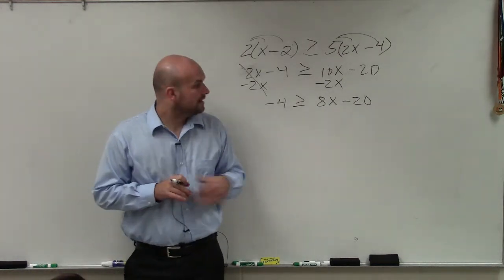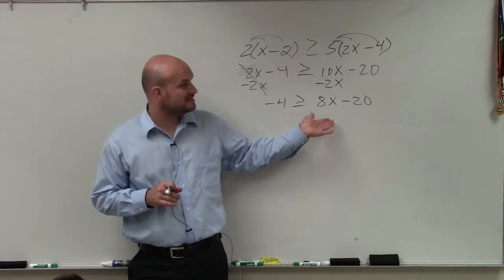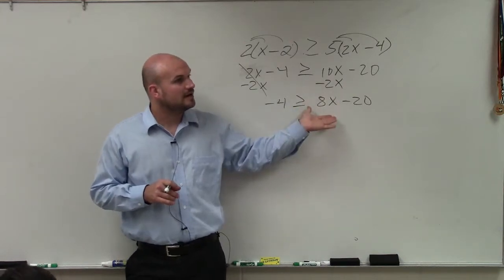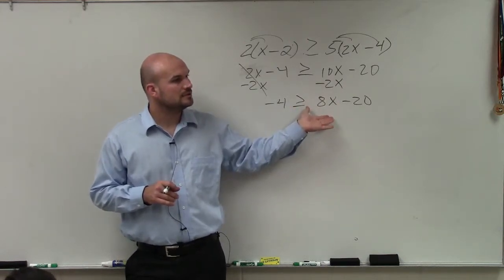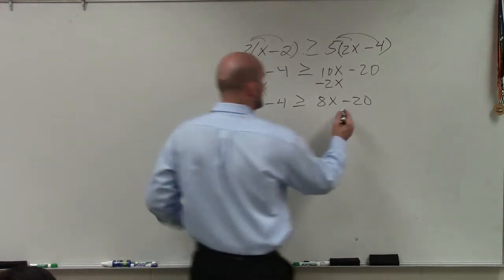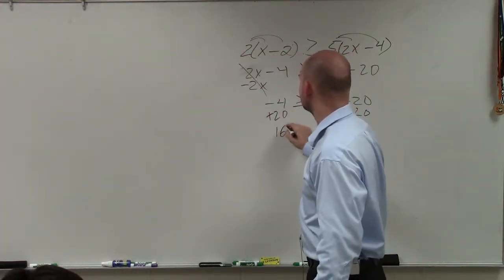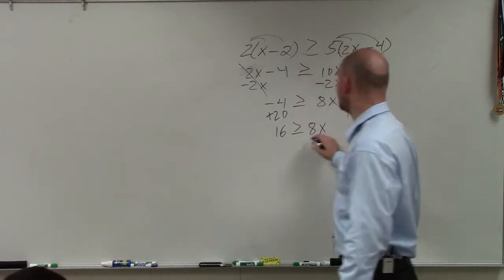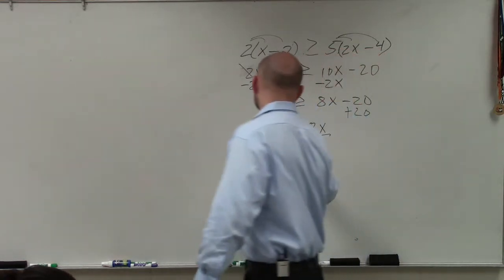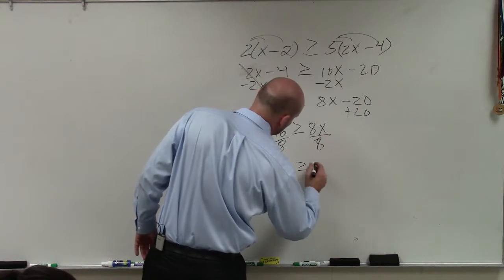Now, the next thing we need to do is just simply apply our operations. I have simplified this down to a two-step equation. So I can just add the 20 over here. I get 16 is greater than or equal to 8x. Divide by 8. 2 is greater than or equal to x.